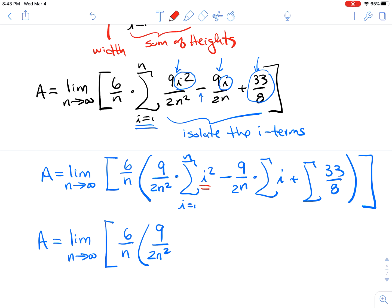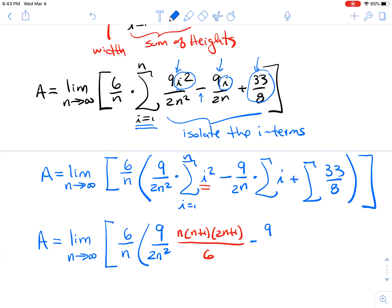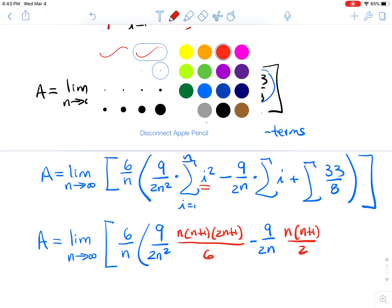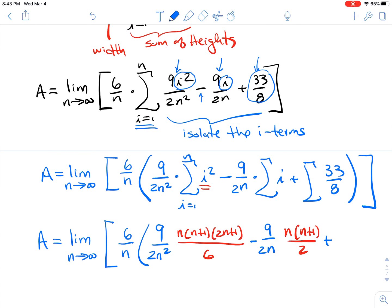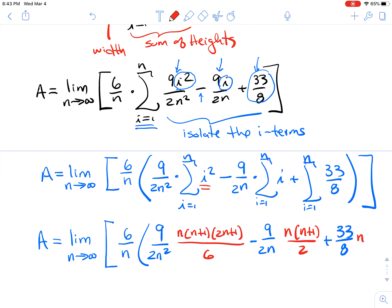Now the I squared I'm going to replace with its summation formula so that is n times n plus 1 times 2n plus 1. The I is replaced by n times n plus 1 over 2 and I forgot to write my I from 1 to n on each of these. And the constant just gets multiplied by n.